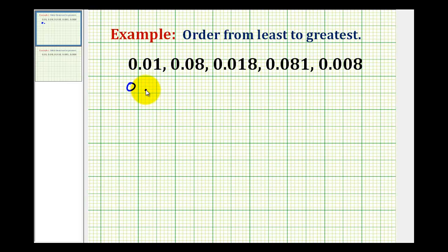So we'll have 0.01, 0.08, 0.018, 0.081, and 0.008. Notice how two of these decimals only have two digits to the right of the decimal.